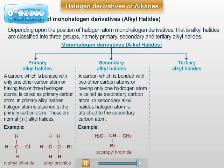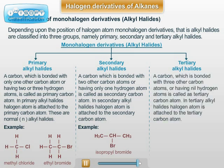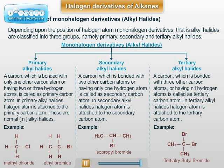3. Tertiary Alkyl Halides: A carbon which is bonded with three other carbon atoms is called a tertiary carbon atom. In tertiary alkyl halides, the halogen atom is attached to the tertiary carbon atom. For example: Tertiary Butyl Bromide.